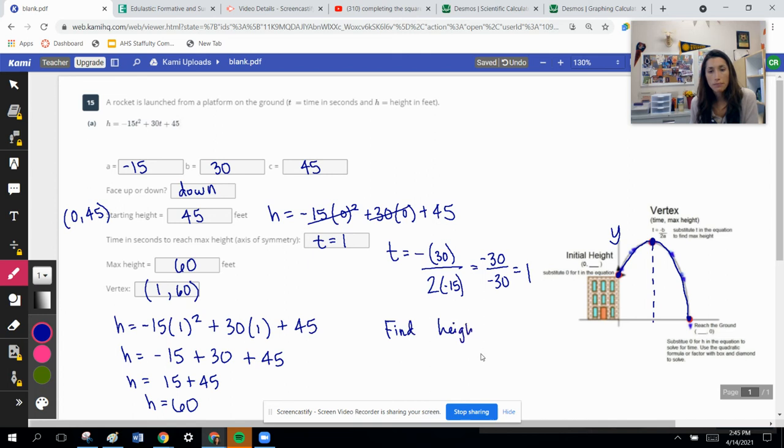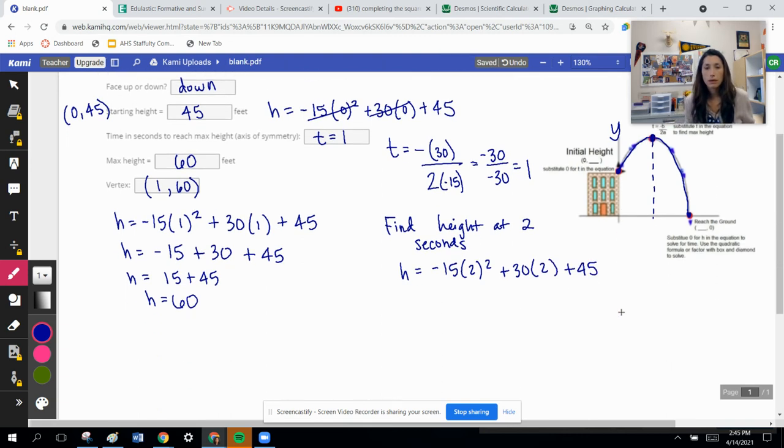Find height at two seconds. So you might be asked for a specific period of time, finding the height for that. So that would just be plugging in. Well, let's figure out the height when I plug in a two. So we've got a negative 15. We're going to plug in two, square that, plus 30 times two, plus 45. Let's scroll down a little bit. So this is going to be negative 15 times four, plus, we'll multiply this out. This is going to be 60 plus 45.